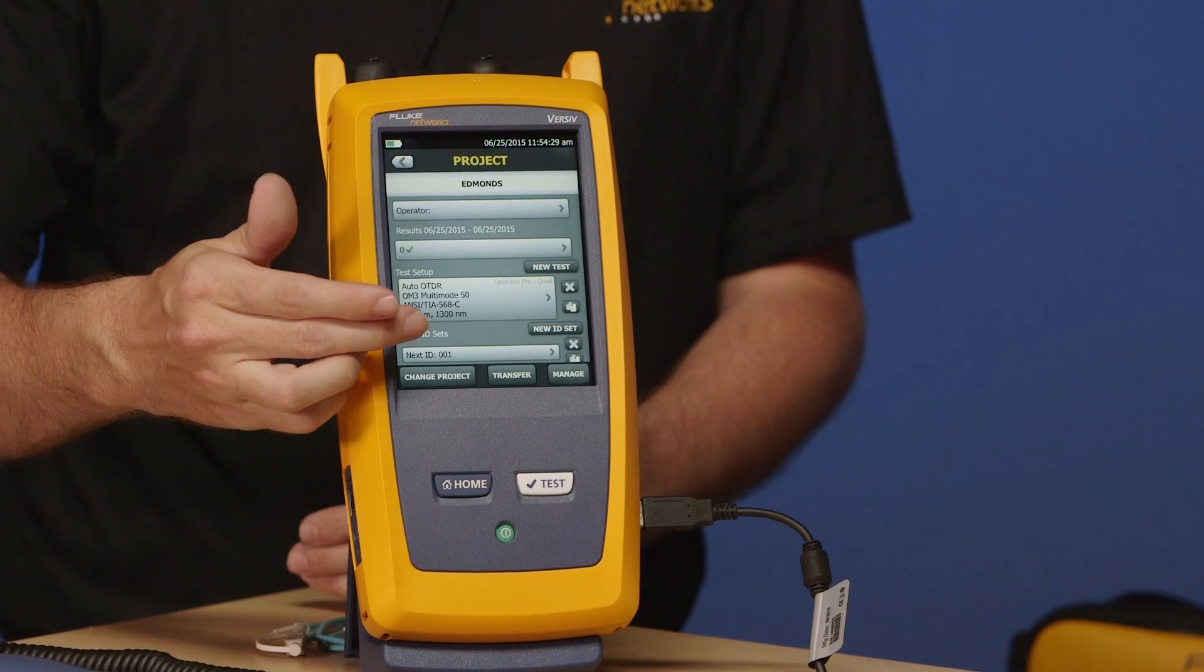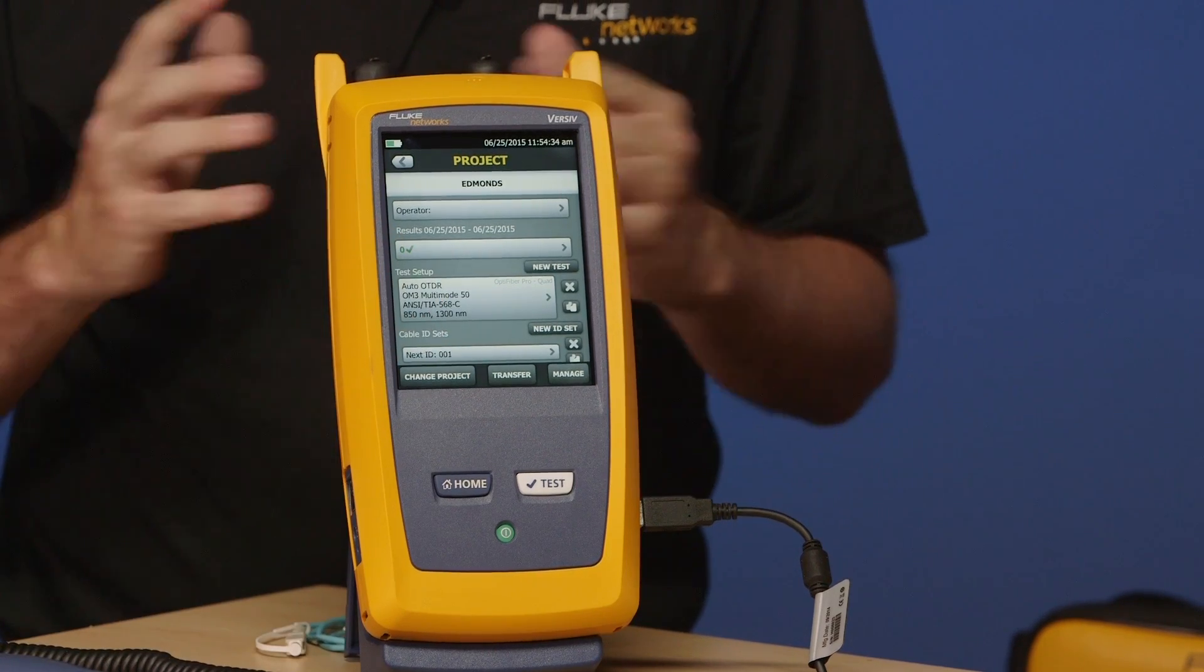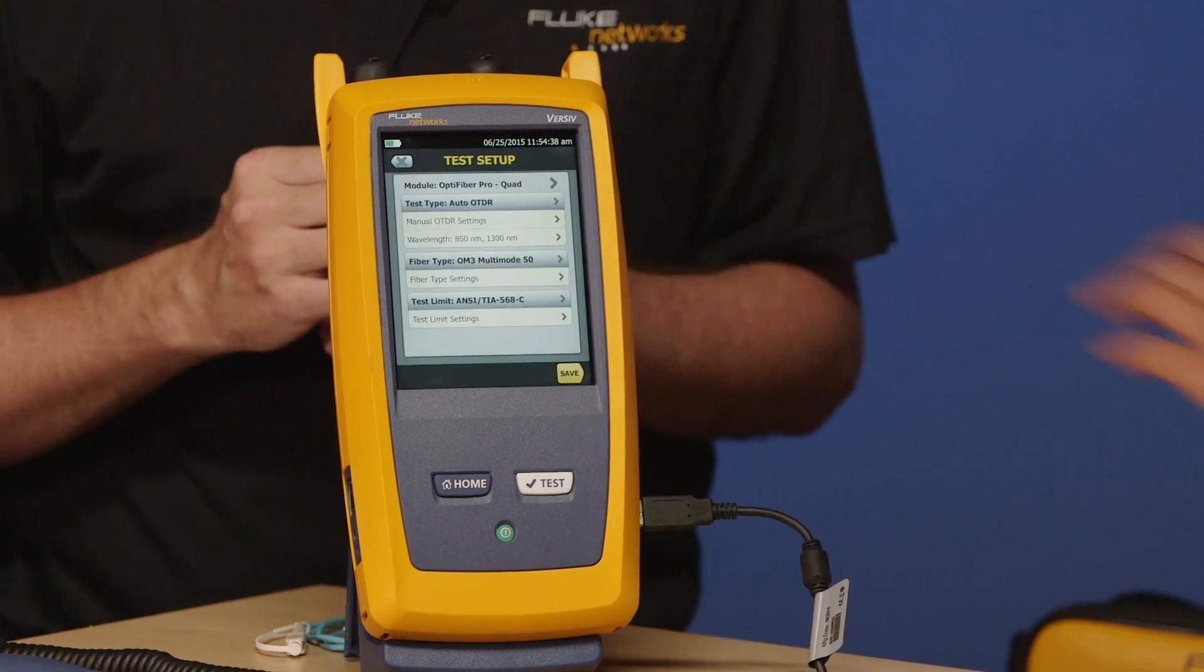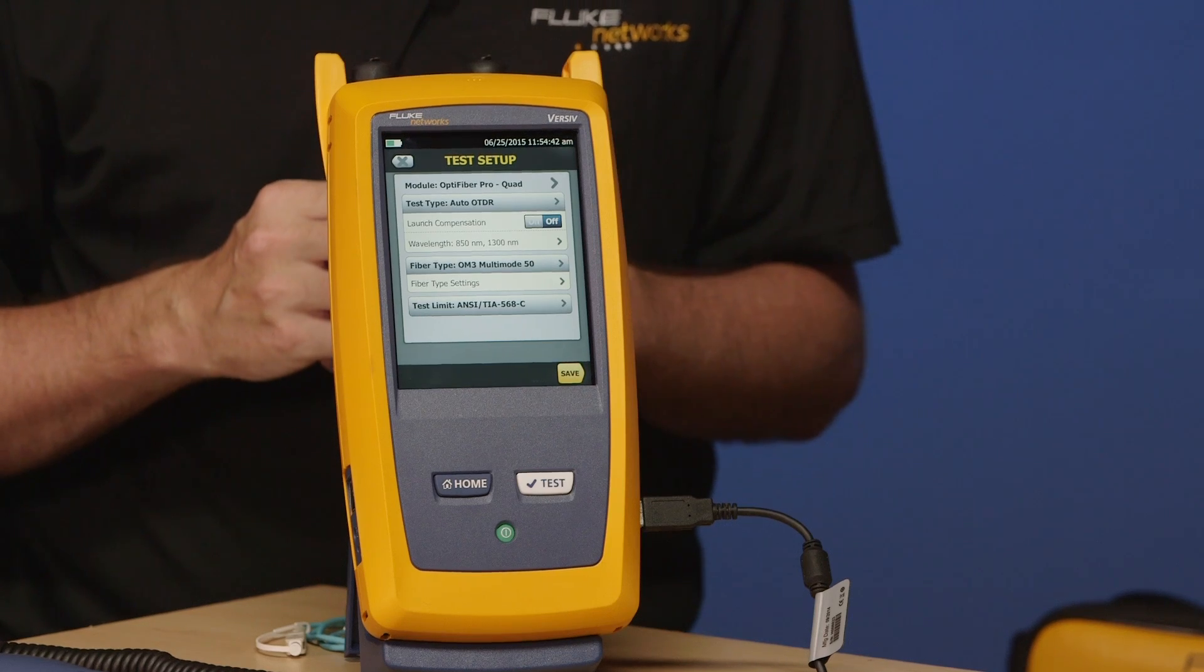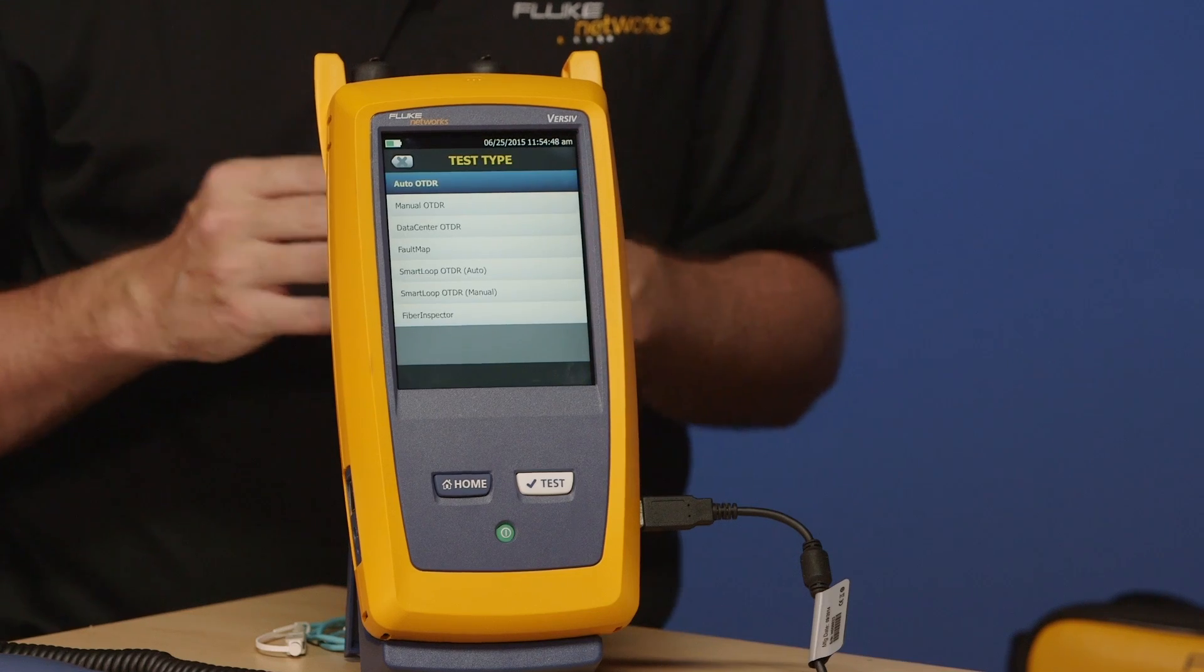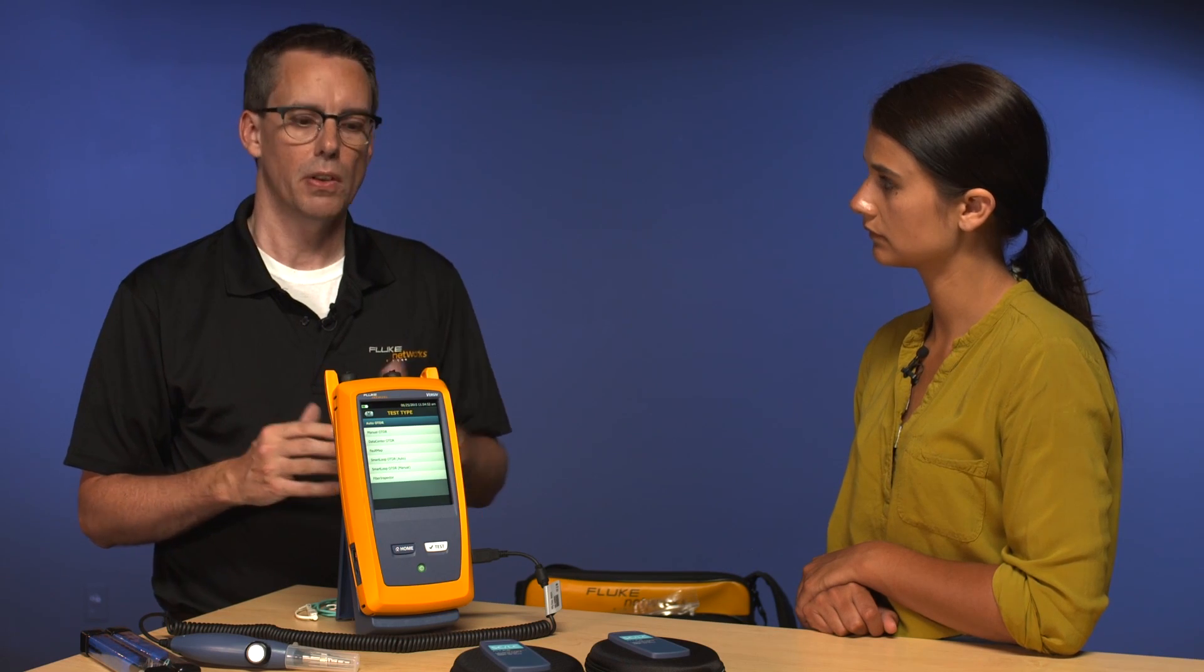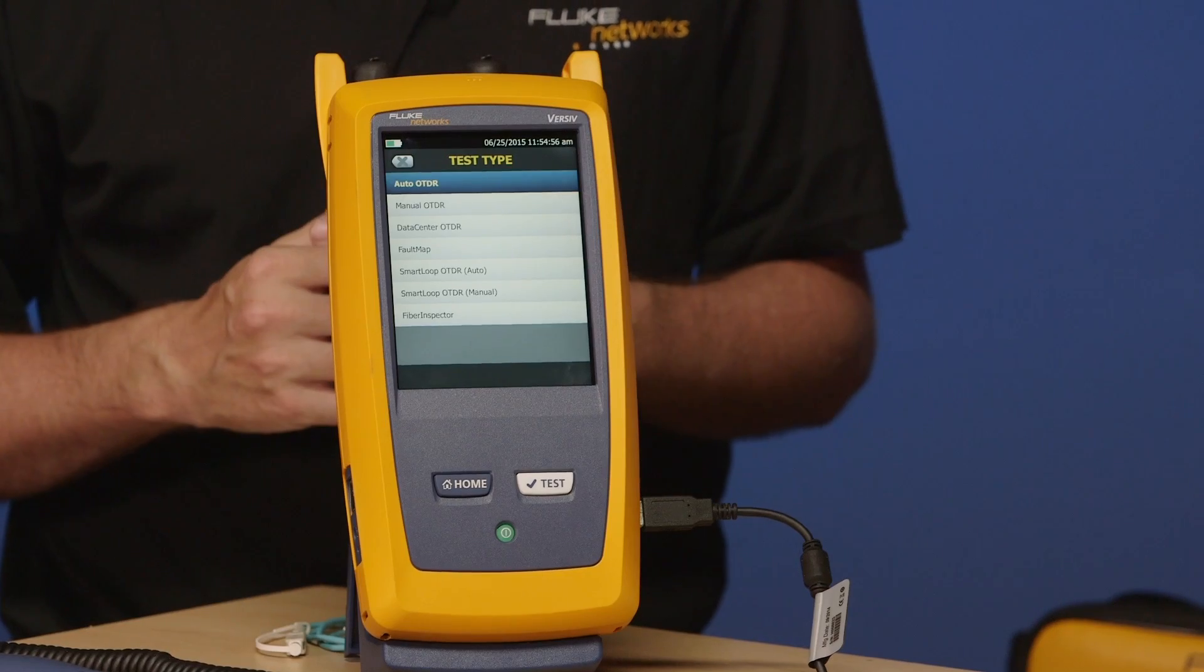Then you get your basic setup. Because we have the OptiFiber Pro module in the back, it's automatically gone to a default OTDR configuration. Let's take a look at that. So the first thing on there is the type of OTDR test. And there are a number of options here, so go ahead and tap on Test Type for me. We're not going to do all of these today. This is just a getting started video. The first option on here is Auto OTDR, which is one of the most common settings.